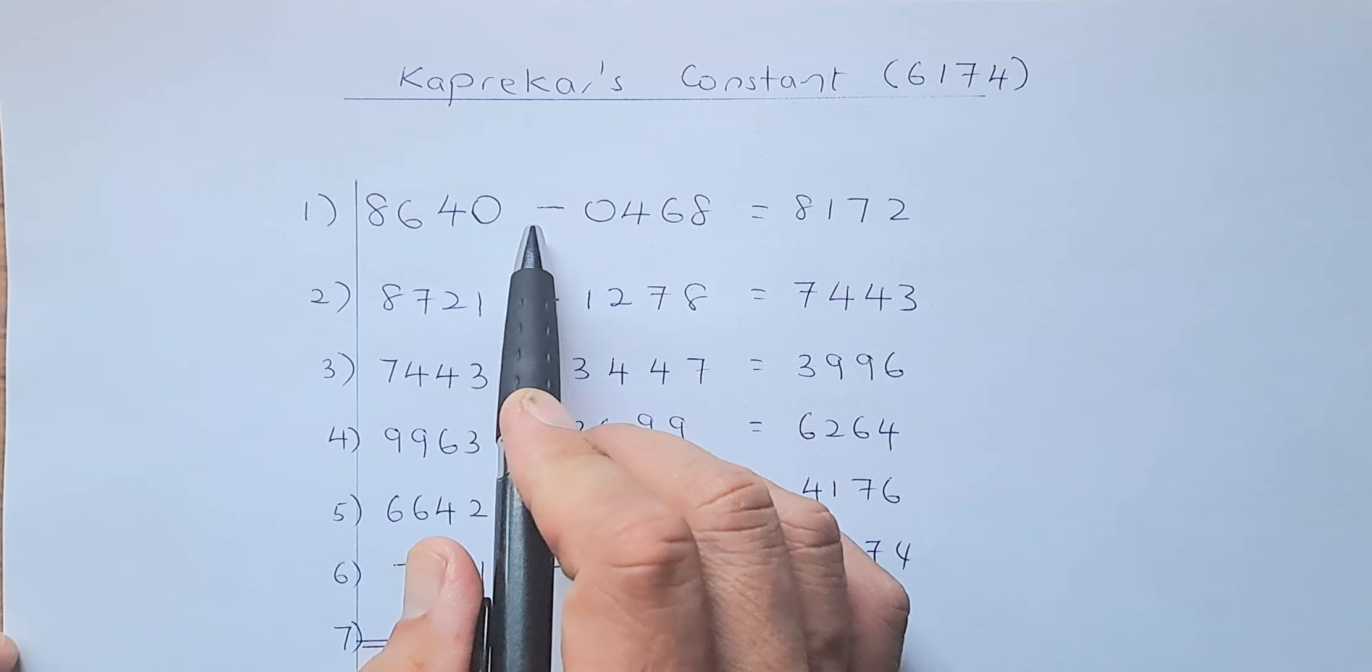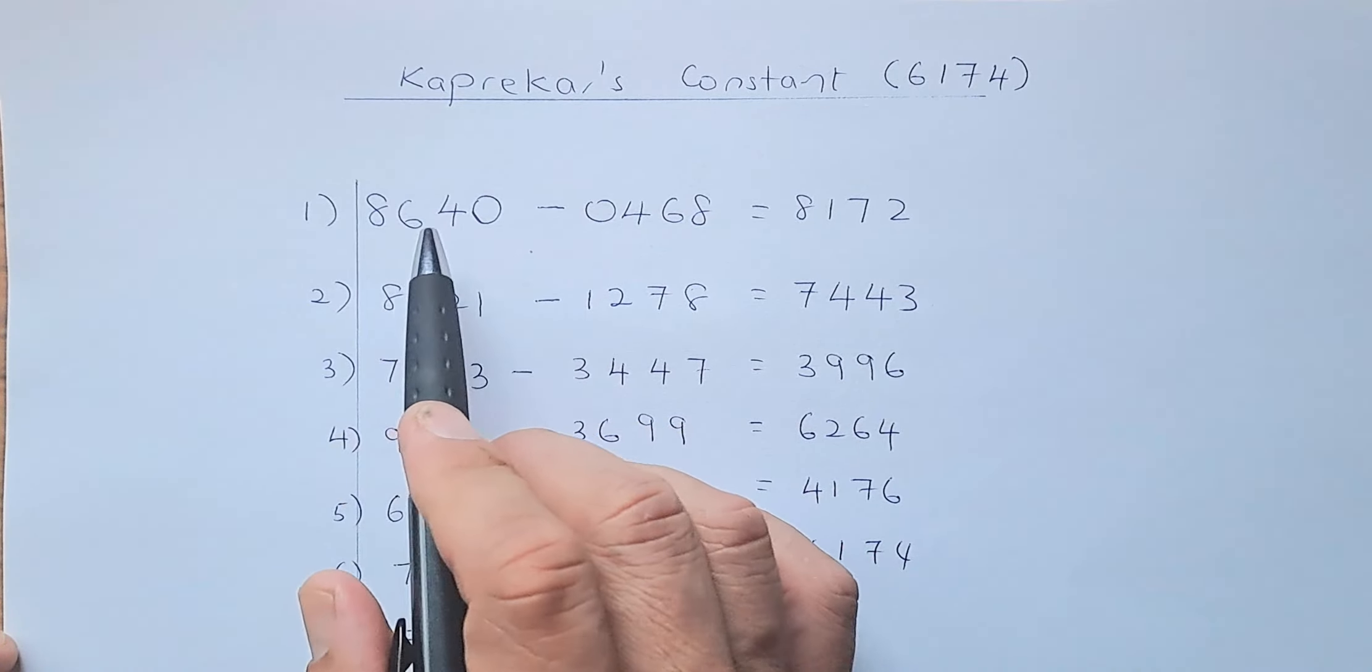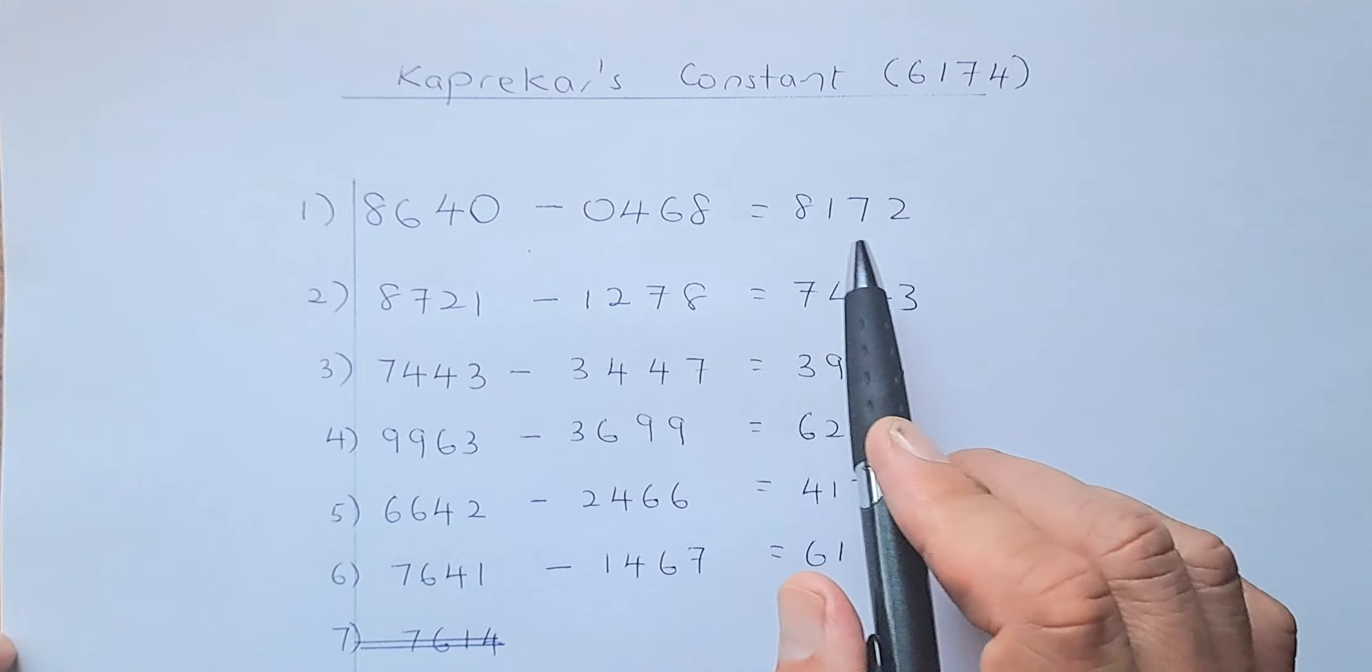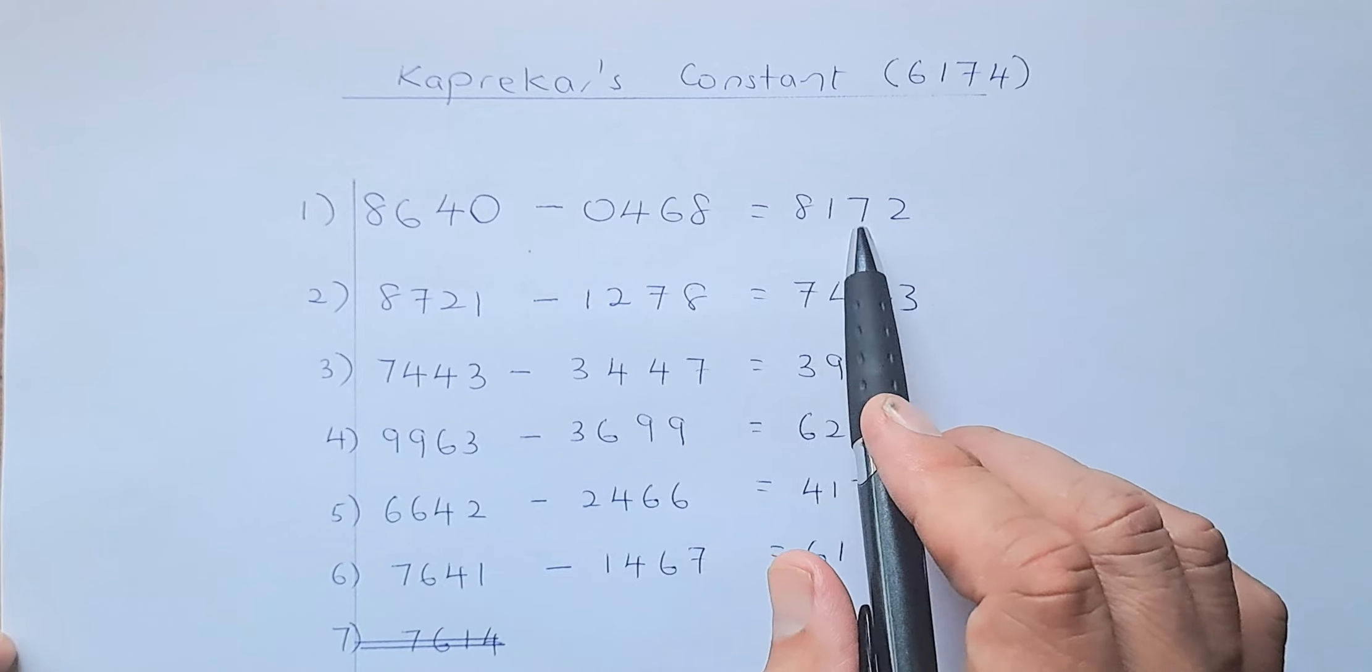The next step you're going to do, you are going to minus the reverse. So you take the smallest to the biggest. Put your calculator and the answer is going to come up to 8172.